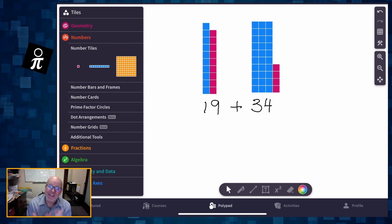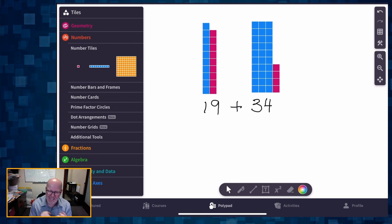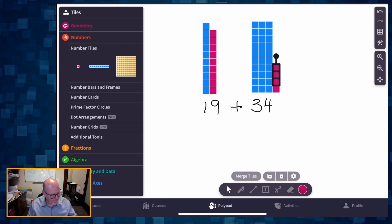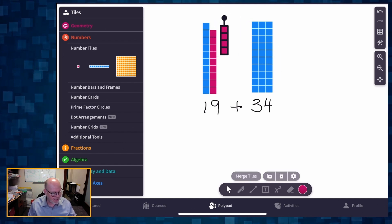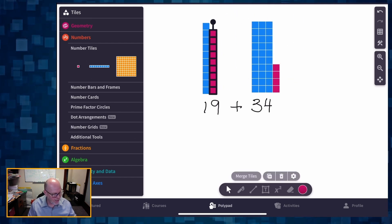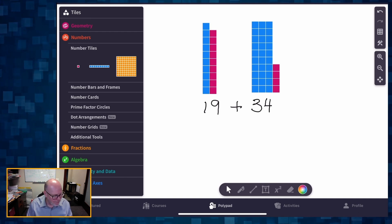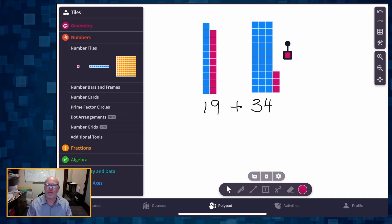Now that I've got 19 plus 34, I'm going to see if I can complete a 10. Can I make a 10? And of course I can. I could either take some of these four and give them over here to the nine, or I could take some of these nine and bring it over here and give it to the four in order to complete the 10. I think in this case, I'm going to take one from the 34.